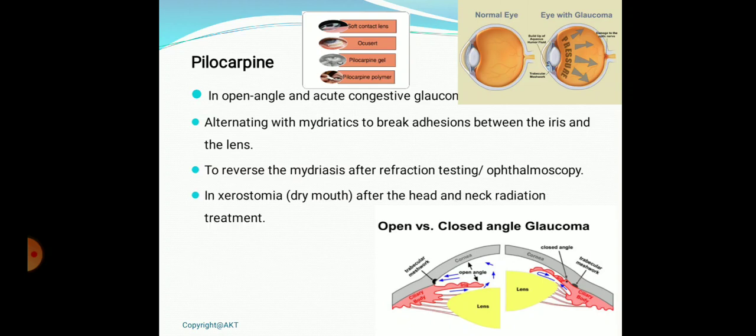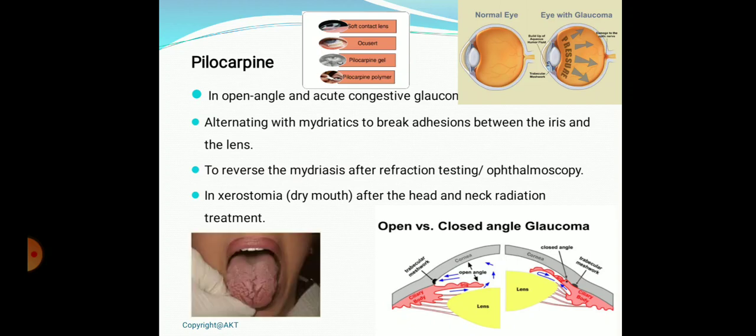In xerostomia — dryness of mouth — cholinomimetics increase salivation. Pilocarpine 5 mg tablets can be given to increase salivation, especially after head and neck radiation treatment where the tongue becomes very dry. Pilocarpine 5 mg tablet, taken three times a day, will improve salivation in such cases.